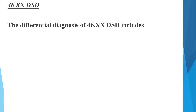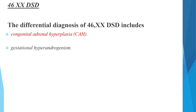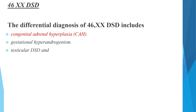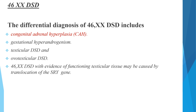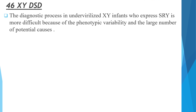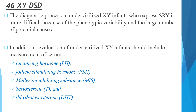Based on karyotype, if it is 46XX DSD, the most common differential diagnosis is congenital adrenal hyperplasia, followed by gestational hyperandrogenism, testicular DSD, ovo-testicular DSD, and 46XX DSD with evidence of functioning testicular tissue, which may be caused by translocation of the sex-determining region on the Y chromosome. If it is 46XY DSD, the diagnostic process in undervirilized XY infants who express SRY is more difficult due to phenotypic variability and the large number of potential causes, and requires endocrinological evaluation.